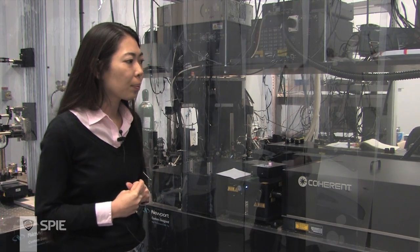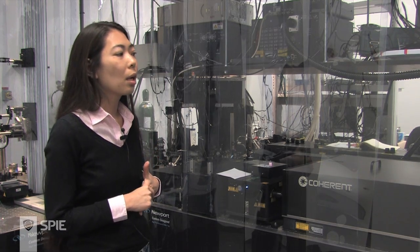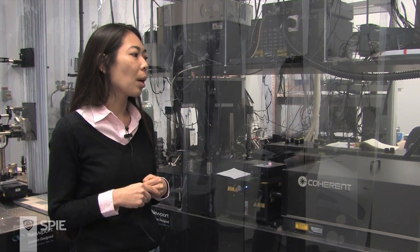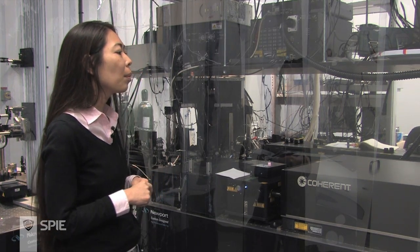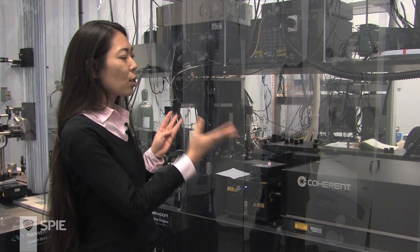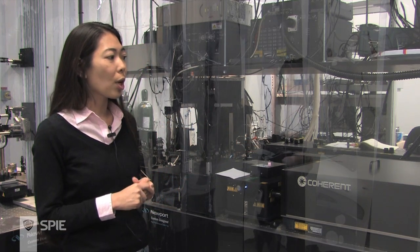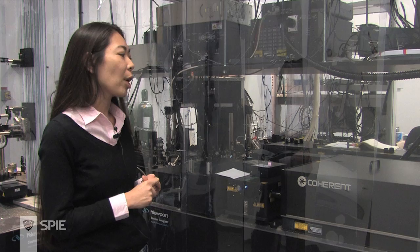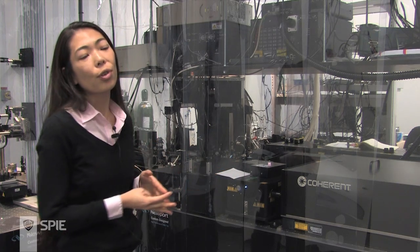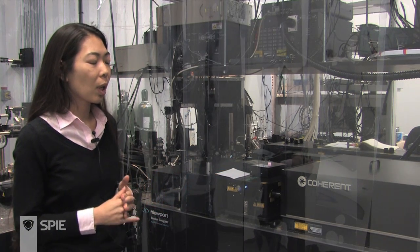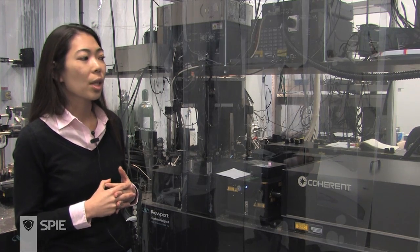we use anesthetized rodents. These are often transgenic animals that mimic Alzheimer's disease or have fluorescent proteins in the brain so we can see what's happening. These two setups are used for imaging neurons and blood vessels in the living brain, and the second laser ablates vasculature to make small clots or hemorrhages to study stroke.